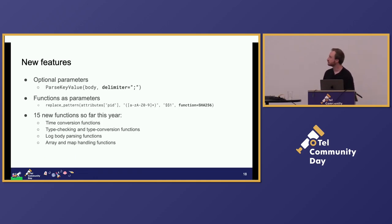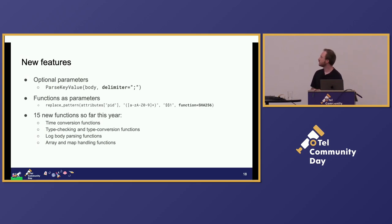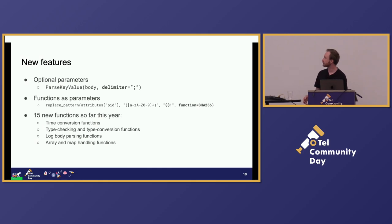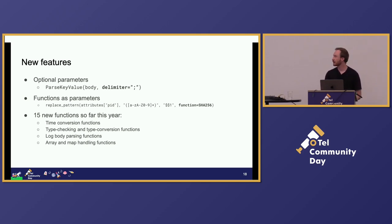Finally, I do want to cover some new features that we've added recently. First, the first two I've covered earlier: optional parameters — for example, for the parse key value function, we have a default delimiter and users might want to override that, so they're given the option to set their own delimiter if they want. Similarly, with functions as parameters, you can pass in a function if your function accepts that and it matches the function signature — not common but useful for complex use cases. And then finally, we've added 15 new functions so far this year and we're continually adding more. So if there's a function you felt was missing prior, check back because it might be there now.